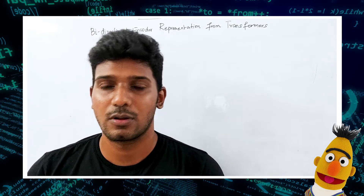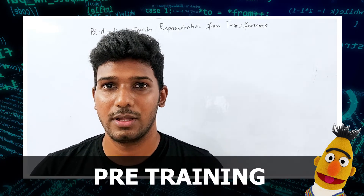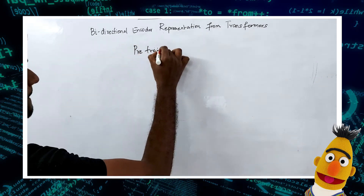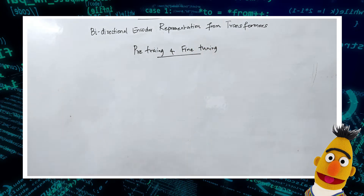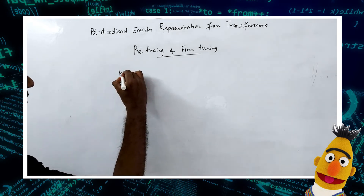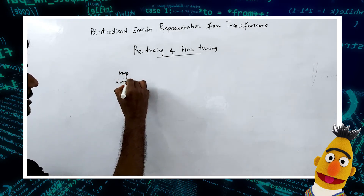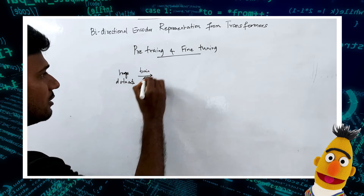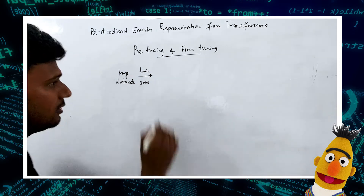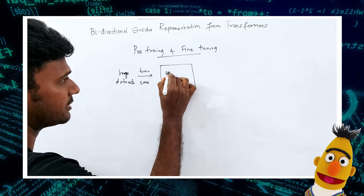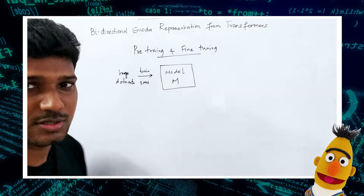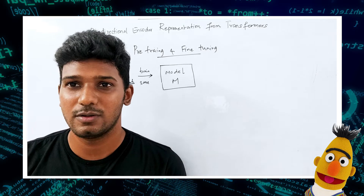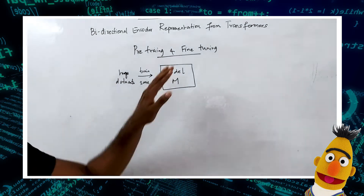Hello and welcome back. In this video I am going to talk about two things: pre-training and fine-tuning. Let's assume we have a very huge dataset with millions and billions of records, and we train our BERT model on that. We train and save that model — we call this model M — which is trained on a huge corpus of data, and that took a lot of computation power and effort.